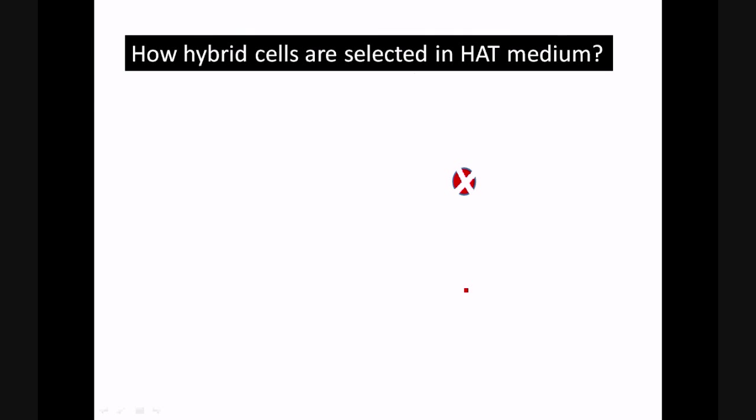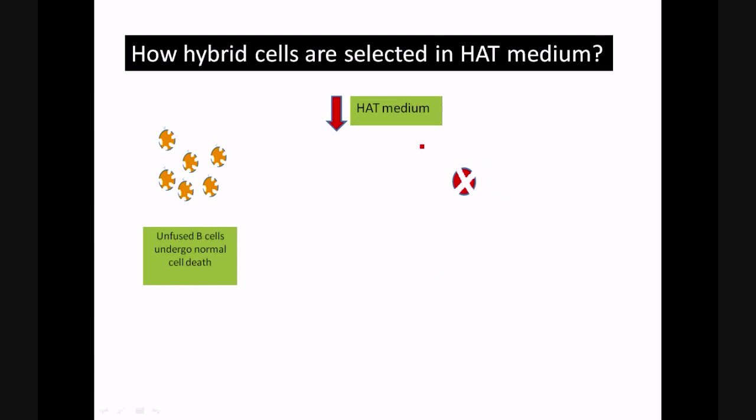So let's have a close look. This is the HAT medium. Now we have the hybrid cells. We need to select the hybrid cell from a whole mixture of all unfused cells.